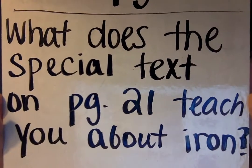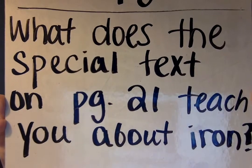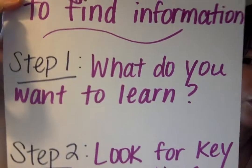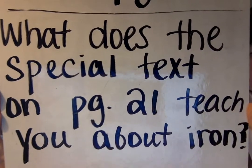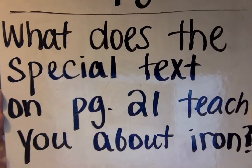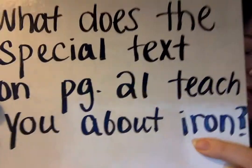Now friends, I'll need your help to answer this next question. Our next question is: what does the special text on page 21 teach you about iron? Step one: what do you want to learn? Looking back at our question, what do we want to learn about? I'll give you a clue — it starts with an I. Go ahead and shout it out. Yes, we want to learn about iron. That is what the question is asking us about.